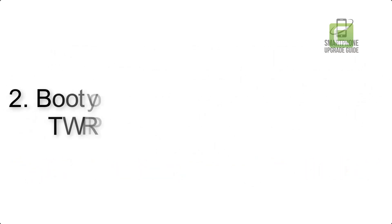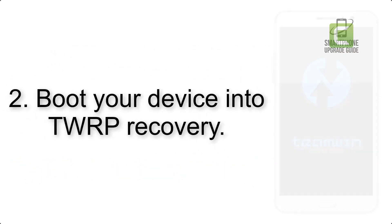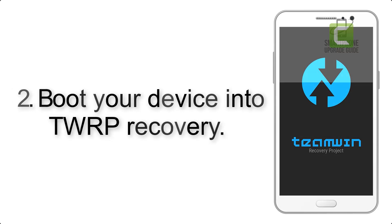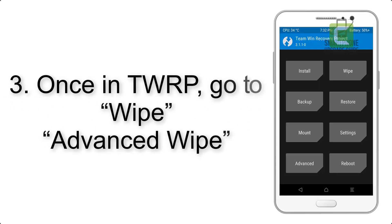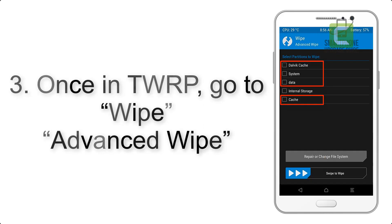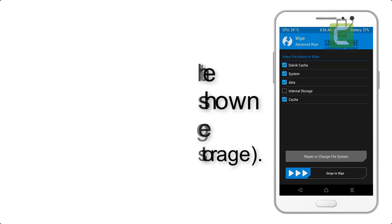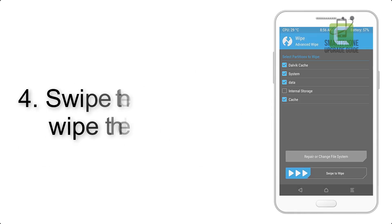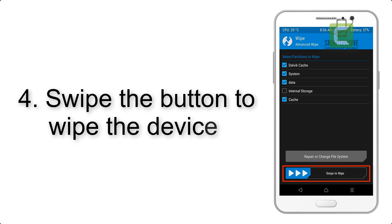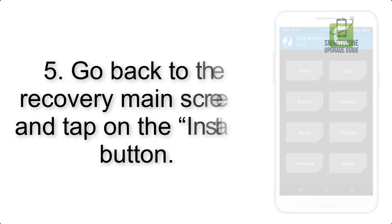Step 3: Boot your device into TWRP recovery. Once in TWRP, click on Advanced Wipe and select the checkboxes as shown in the image, excluding internal storage. Step 4: Swipe the button to wipe the device.